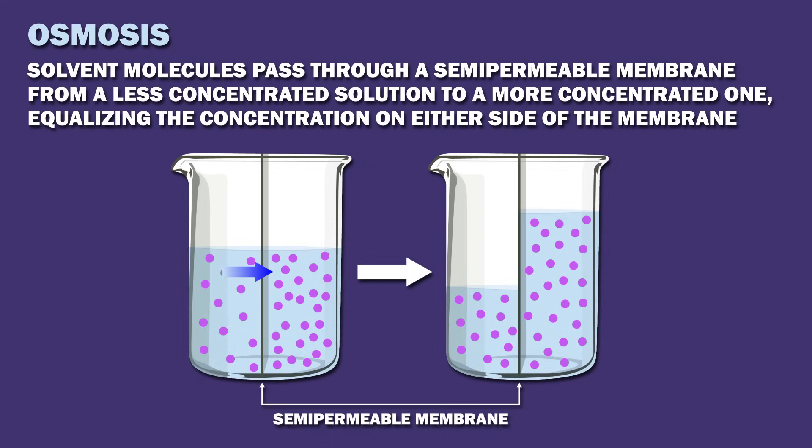As a reminder, osmosis is the process by which solvent molecules pass through a semi-permeable membrane, from a less concentrated solution to a more concentrated one, equalizing the concentration on either side of the membrane.